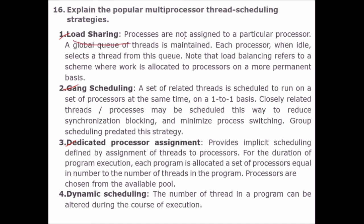Load sharing: processors are not assigned to a particular process. A global queue of threads is built, and each processor, when idle, selects a thread from this queue. Note that load balancing differs from a scheme where work is allocated to a processor on a permanent basis.